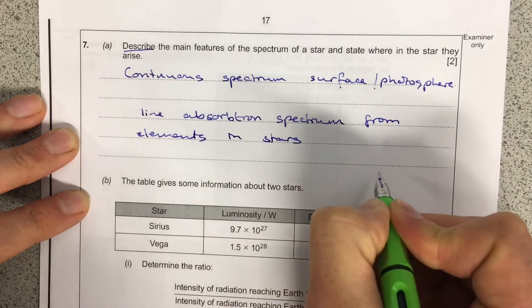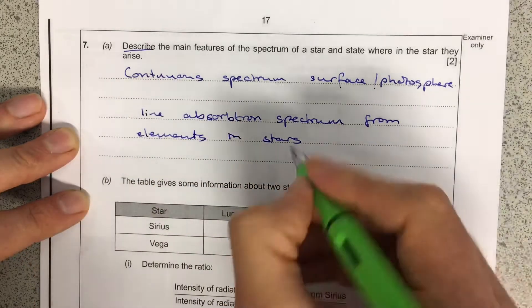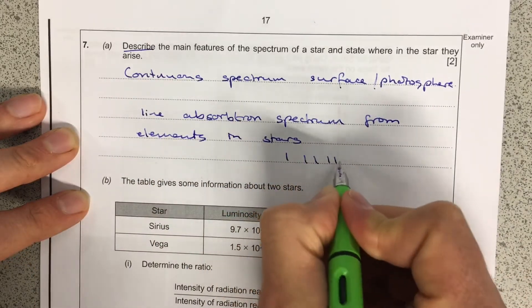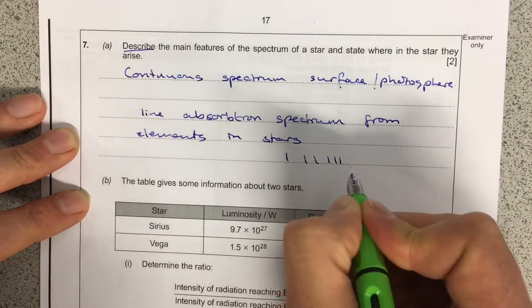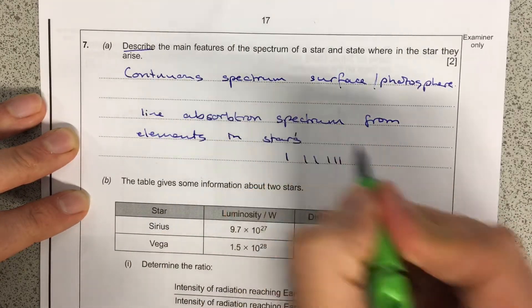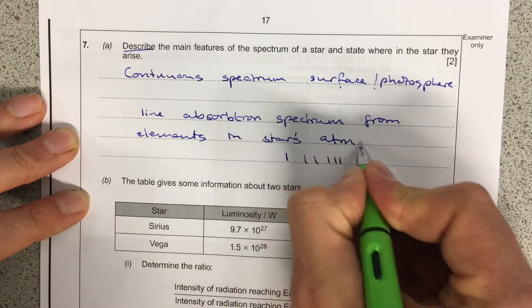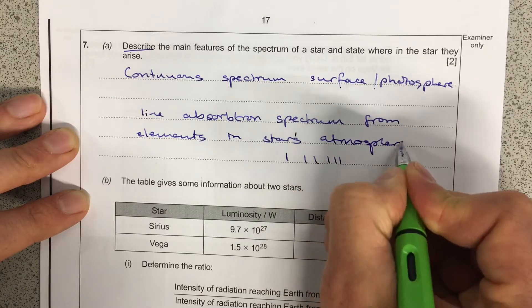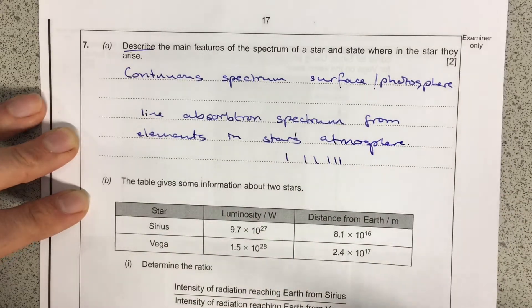So you might remember seeing something in class where you have a continuous spectrum and there are these little missing gaps in that. So you get the hydrogen series for example in there. So that's the star's atmosphere. So that first question is all recall.